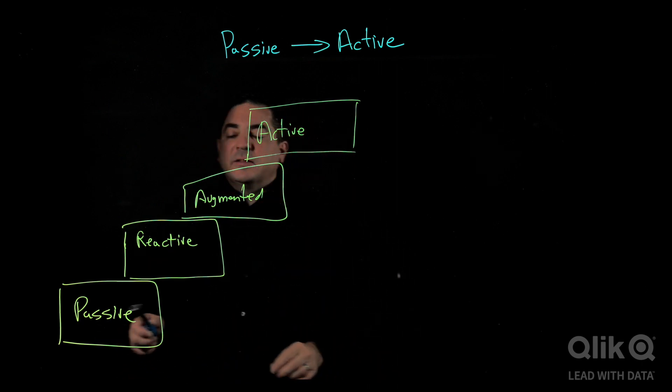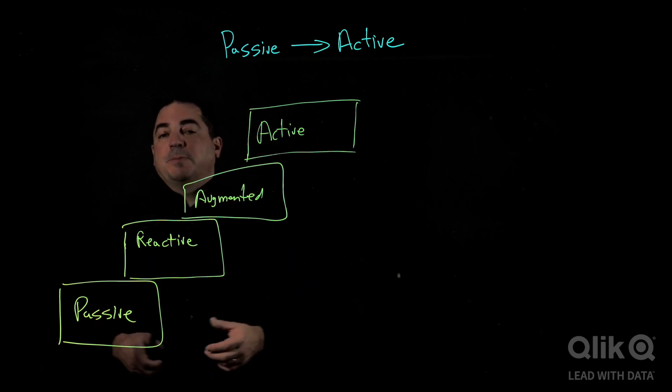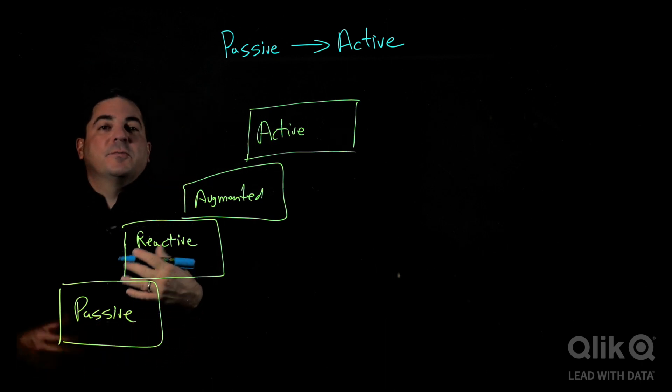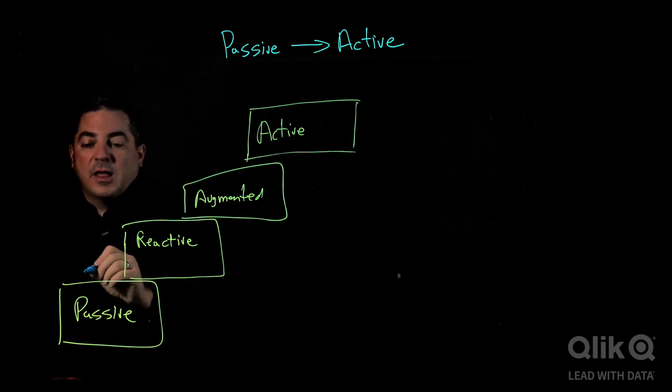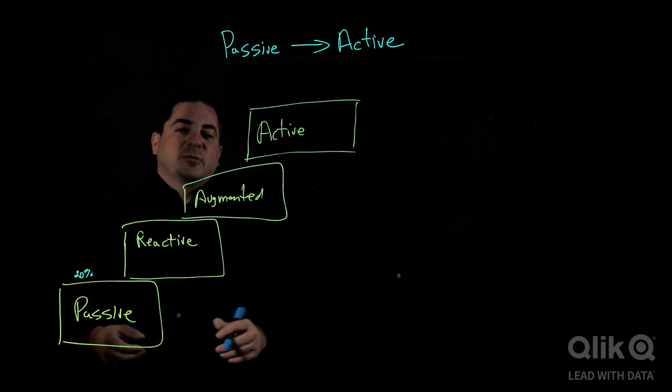With passive analytics, that's generally more report centric, more rigid pipelines. And that is where a lot of traditional BI starts. And we can get only about 20% of decisions end up being data driven as a result of that.